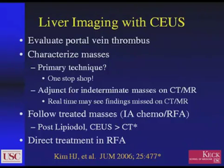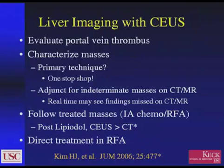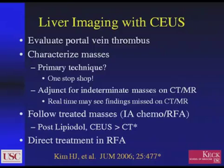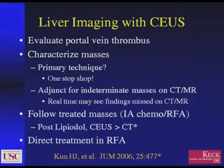Getting more specific now, I'm going to talk about liver imaging with contrast and then turn to kidneys. We use this quite a lot in our practice and have a very active liver tumor group at USC. One of the simplest and very helpful applications is the evaluation of portal vein thrombosis. We can also use it to characterize masses. In our county hospital, where it may be difficult to get patients back, we use it as a one-stop shop — the patient comes in, you find a mass, you give them contrast, and you can determine whether you're dealing with a benign or malignant mass and whether it needs further workup.